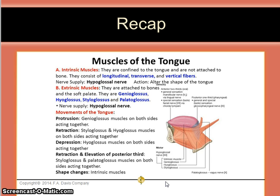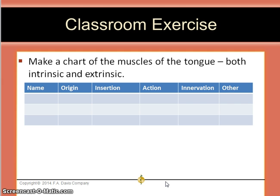Our classroom exercise will be to make a chart of the muscles of the tongue, both intrinsic and extrinsic. You will be making charts of all the muscles that we learn in this class, and this exercise will be done in the classroom after this lecture is complete. You will list the name, origin, insertion, action, and innervation of all the muscles of the tongue. The last column will be for any other relevant information, such as alternate names for the muscles.